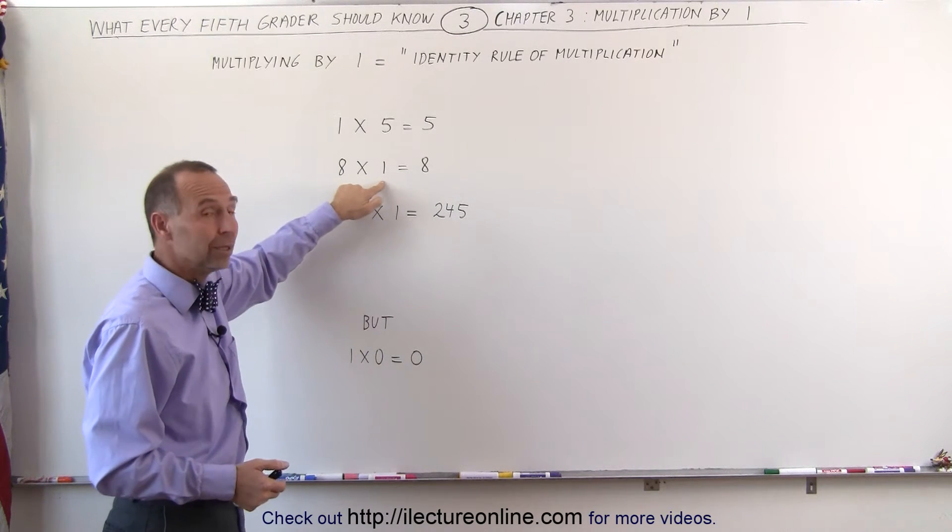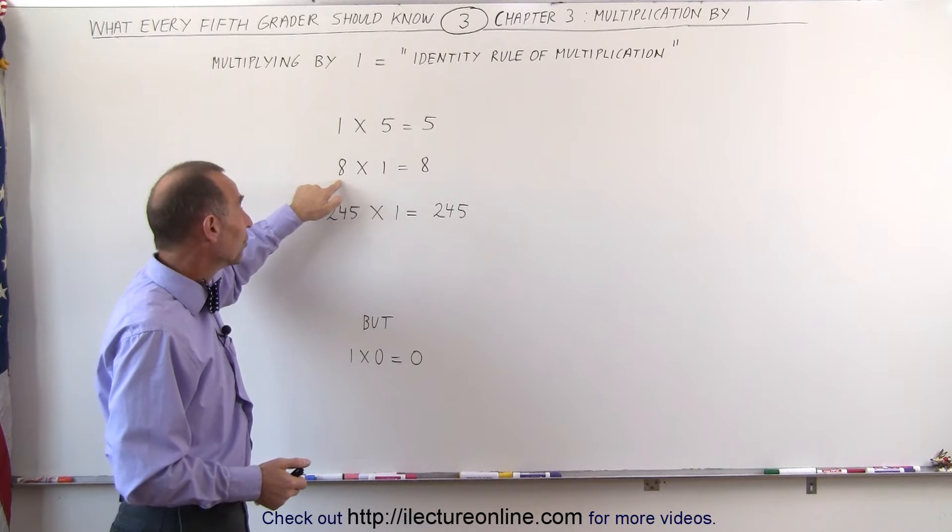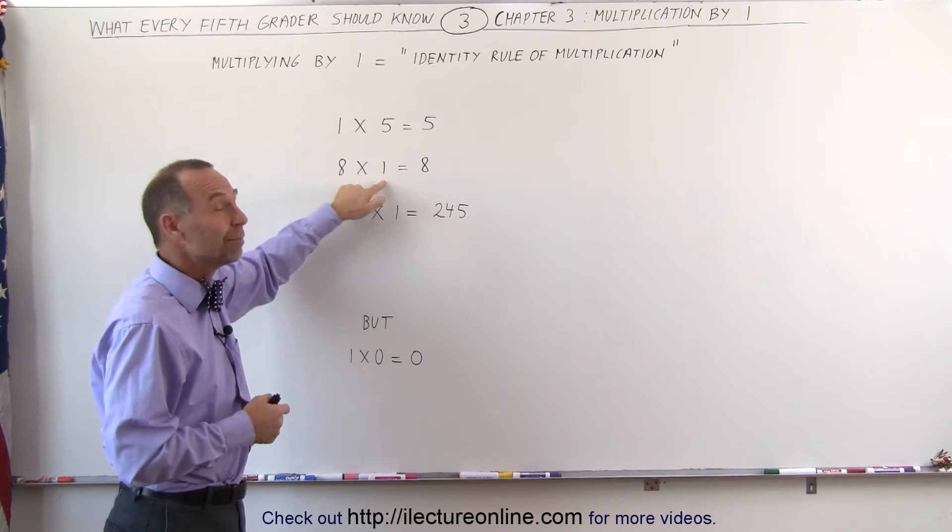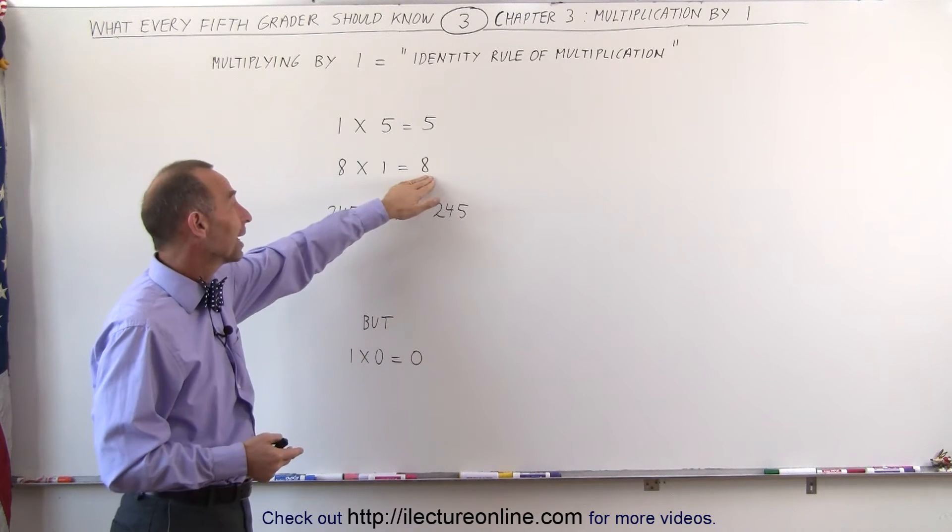Or if you write 8 times 1, no matter how many times you multiply the number 1 by some other number, you always get that same number back. 8 times 1 means there's 8 of them, and therefore you get back 8.